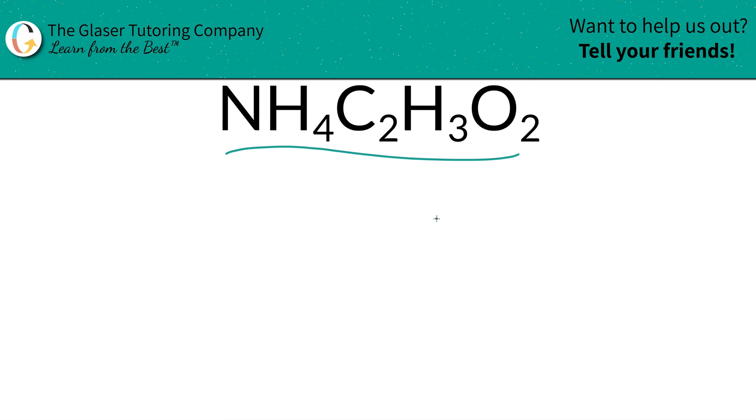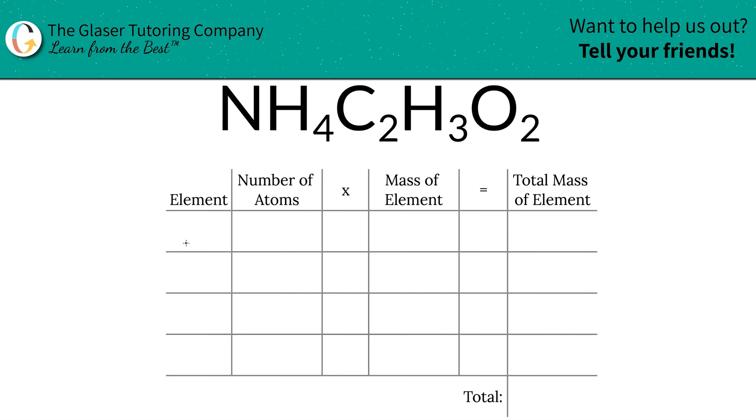Take a look. The first thing is we're going to write the elements we see in the compound. So we've got nitrogen, we've got hydrogen, we've got carbon, and oxygen. Next is to write down the number of atoms of each. In this compound there's only one nitrogen - that's where the subscripts come into play.